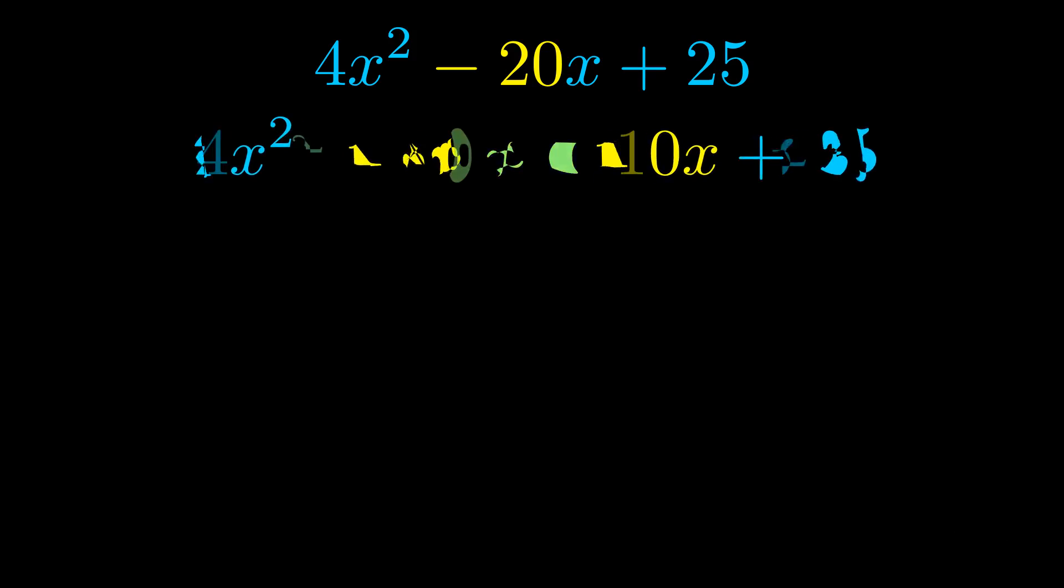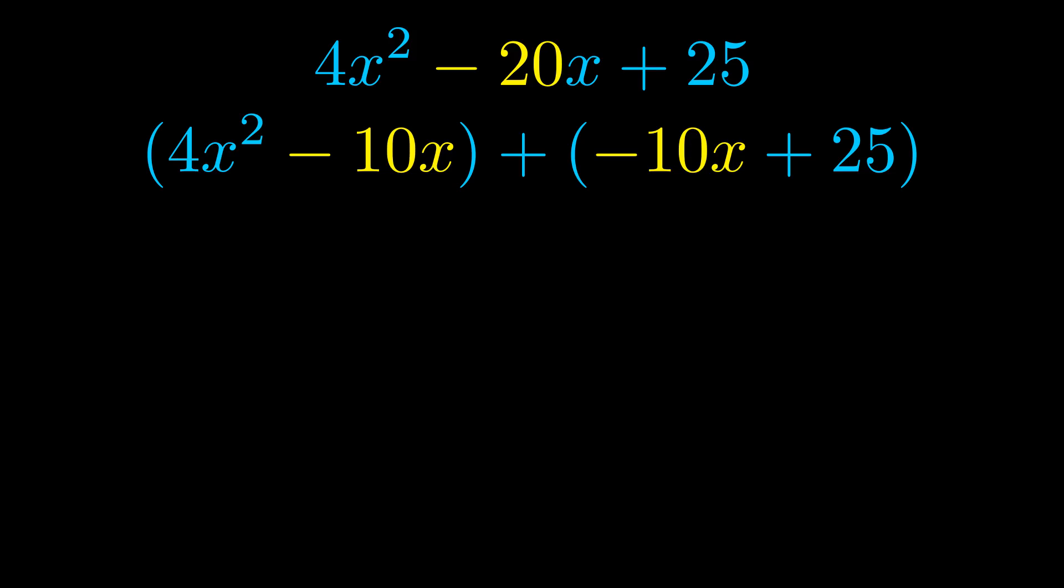Once we've done this we go ahead and we put parentheses around the first term and the last term and we do that so that we can take the greatest common factor out of both terms. We can see the greatest common factor is now outside in green.